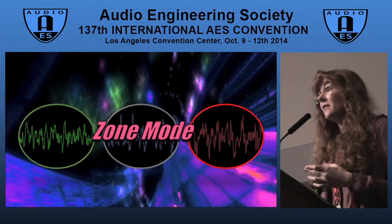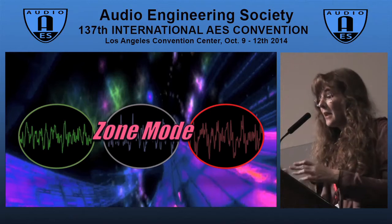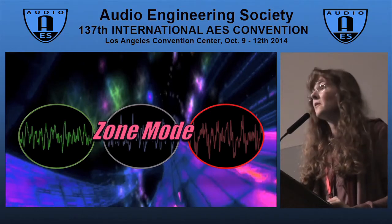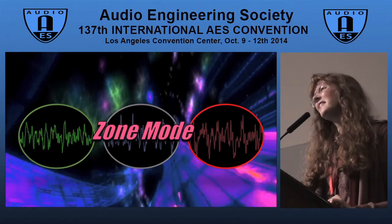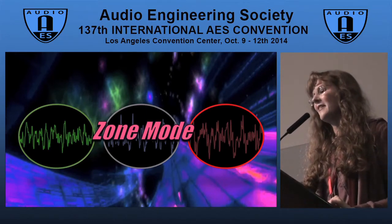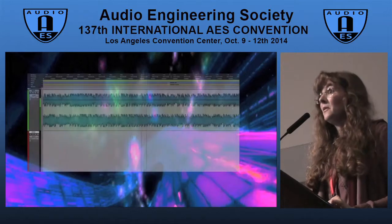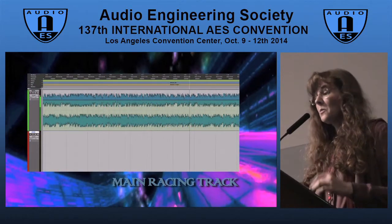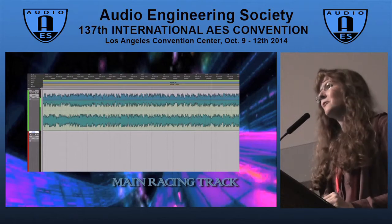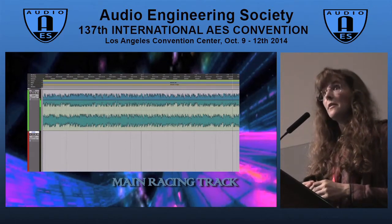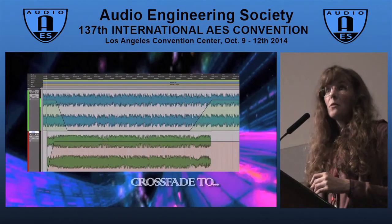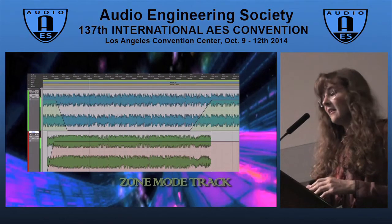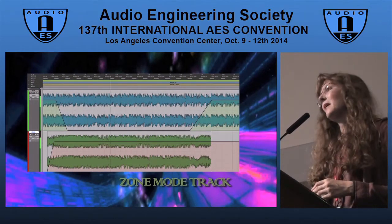The game used horizontal re-sequencing to enable musical interactivity during the zone mode. Let's look at the component musical files in Pro Tools so we can see how the interactive chunks fit together. Every piece of racing music in the game had to be able to transition into its corresponding zone mode. You can see the main piece of racing music cross-faded into the zone mode track, which was always 15 seconds long. Once the 15 seconds had elapsed, the main piece of racing music would pick up seamlessly.